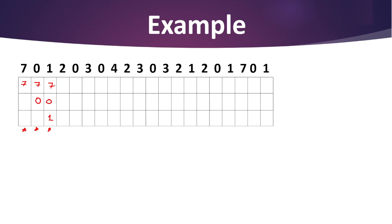Now the main concept starts. The next value is 2. All three frames are already occupied by 7, 0, and 1. We need to add 2 and must replace one of those values. Since we are using LIFO — Last In First Out — the last value entered is 1. So we replace 1 with 2. This is one more page fault, as 2 was not already in the frame.